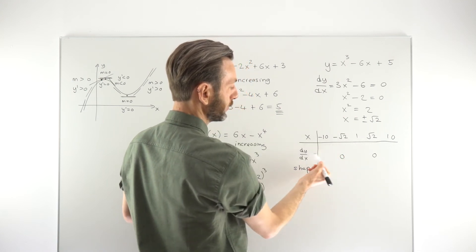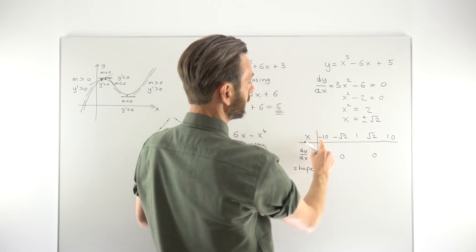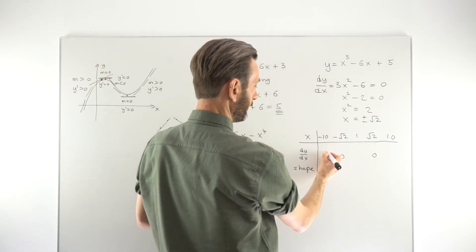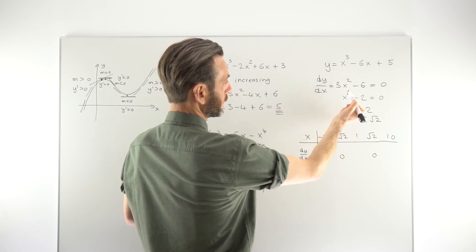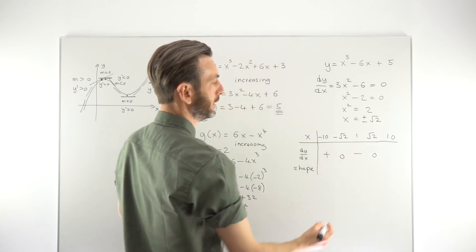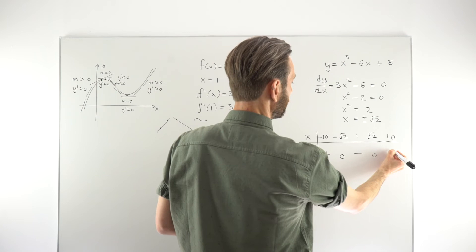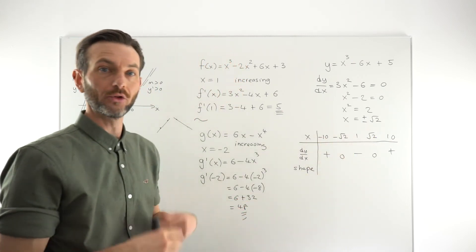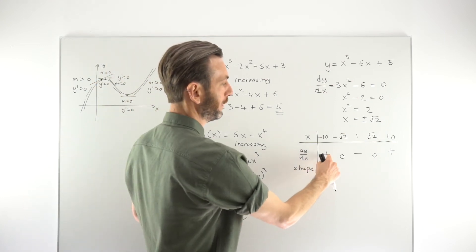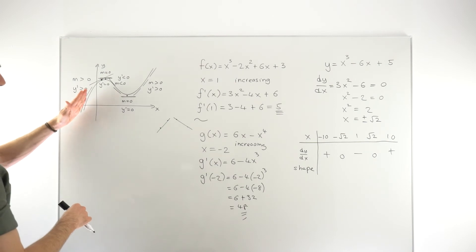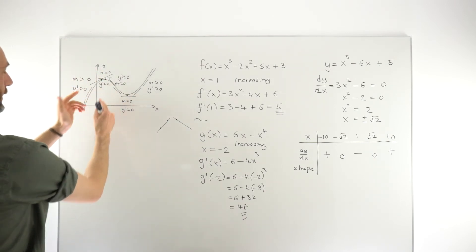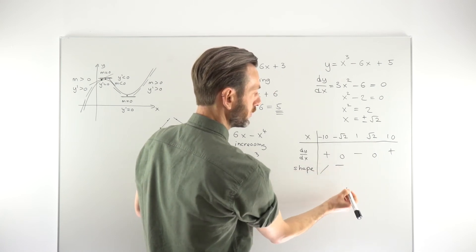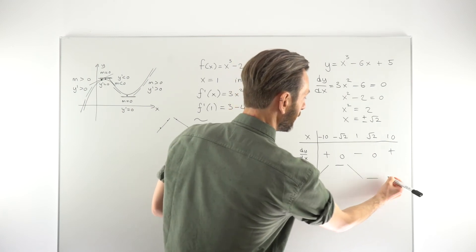We test the derivative 3x² − 6 at each of those values. At x = −10: 3(100) − 6 = positive. At x = 1: 3(1) − 6 = −3, so negative. At x = 10: positive again. We don't care about the actual number, just whether it's positive or negative. So: positive → graph going up; zero → stationary; negative → graph going down; zero → stationary; positive → going up again.